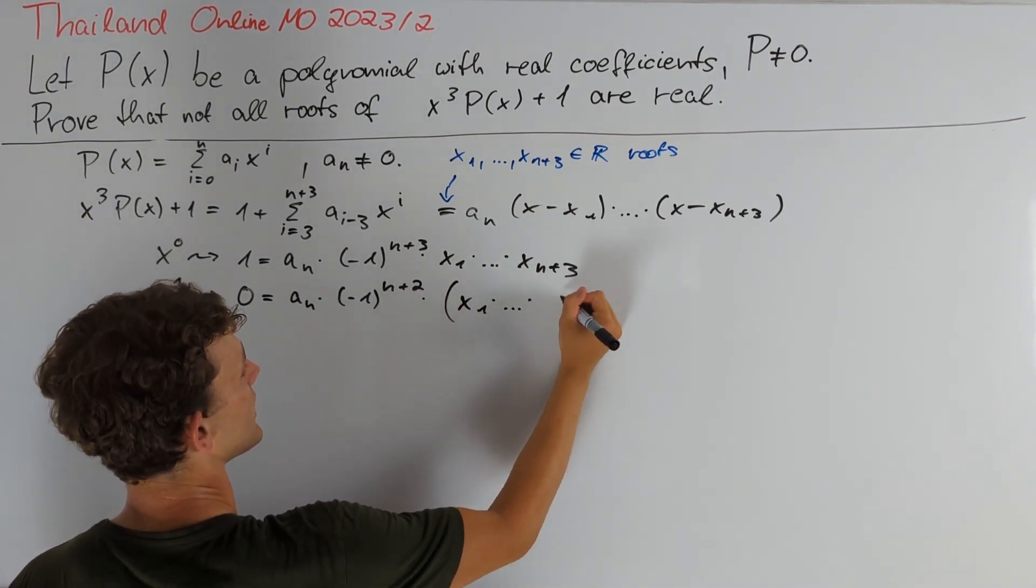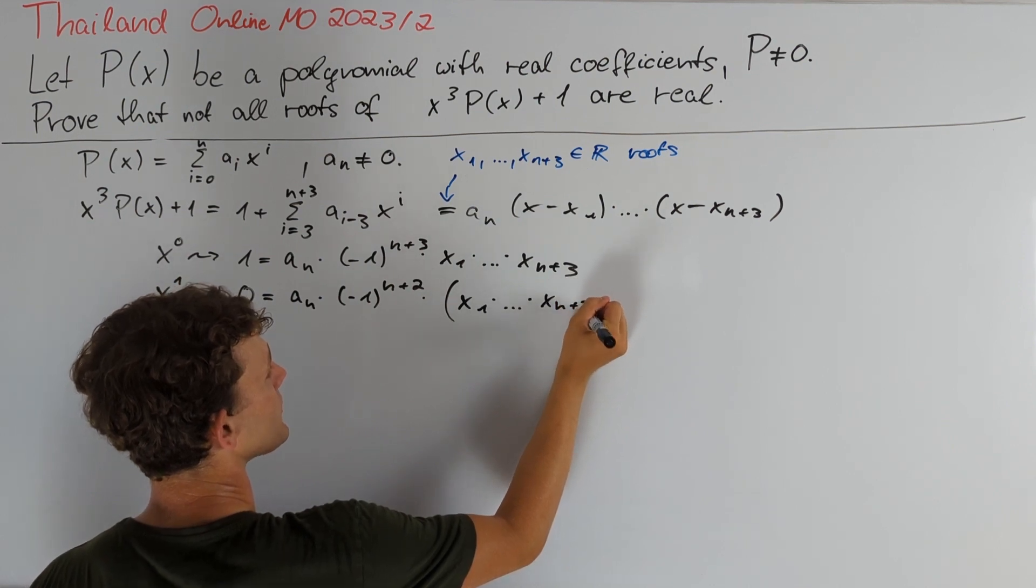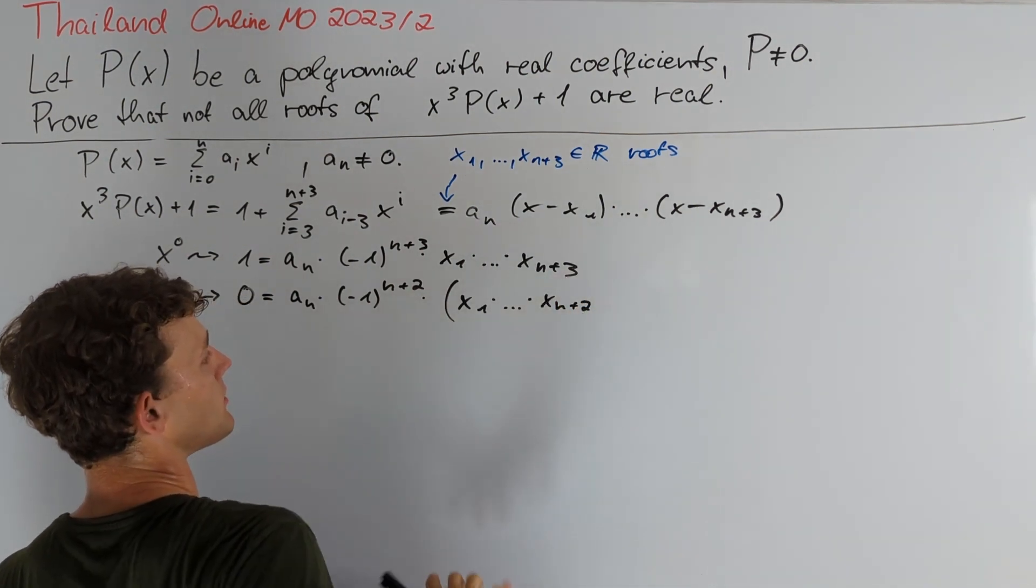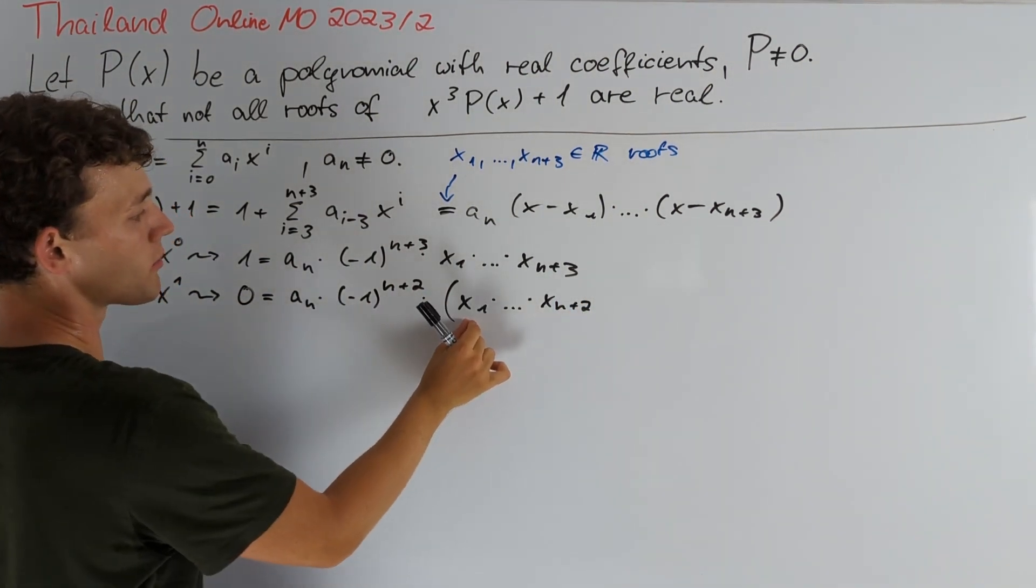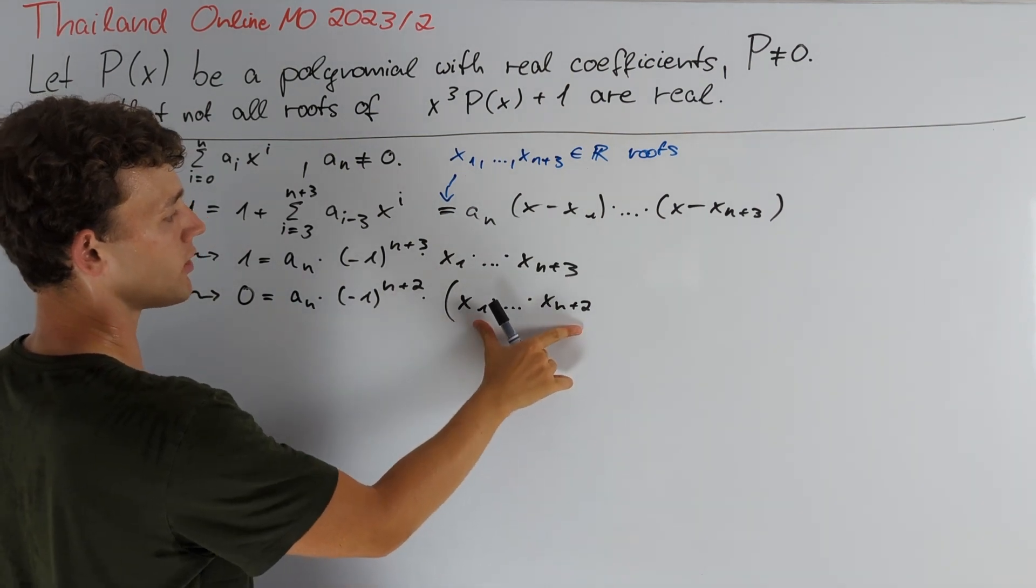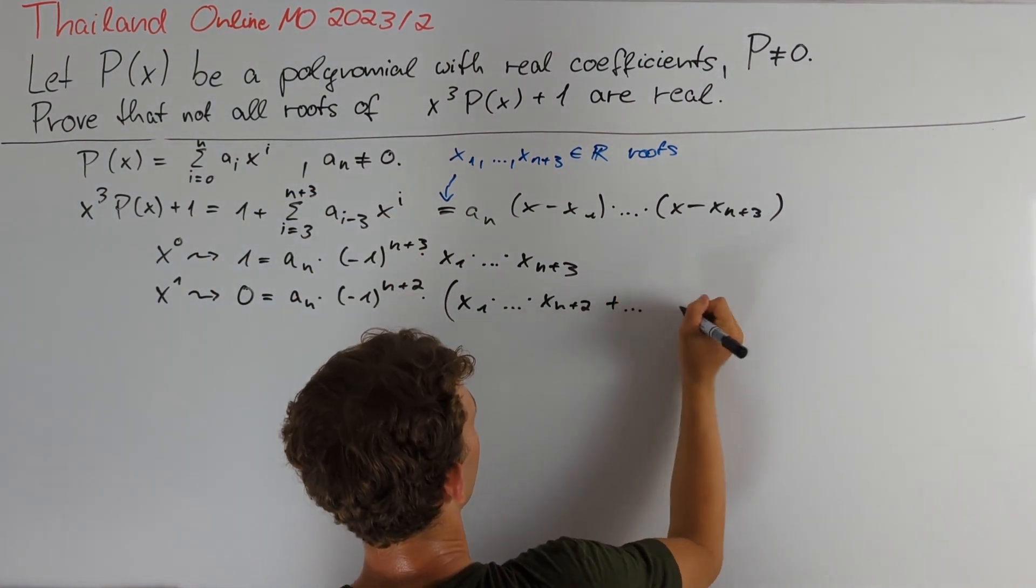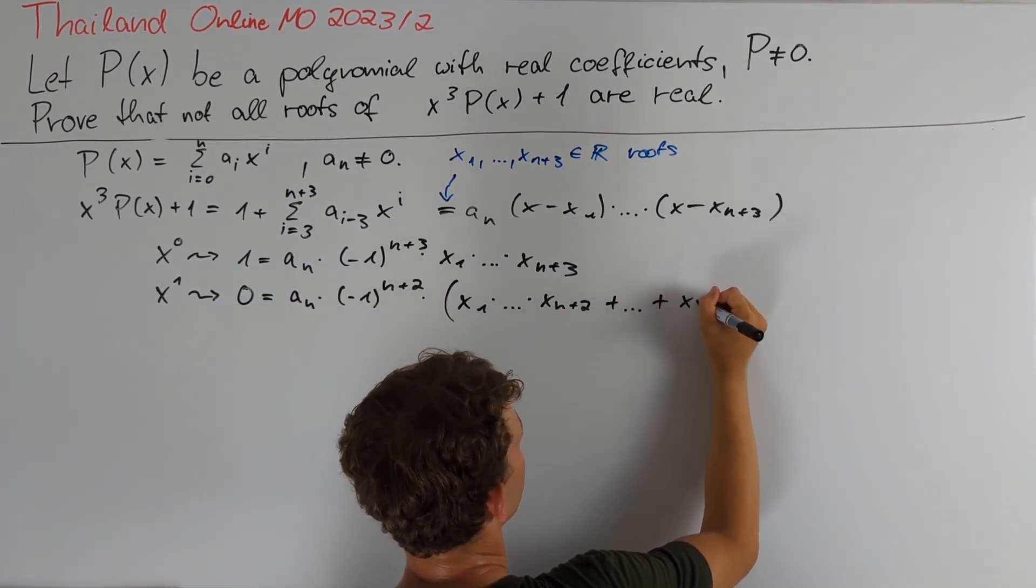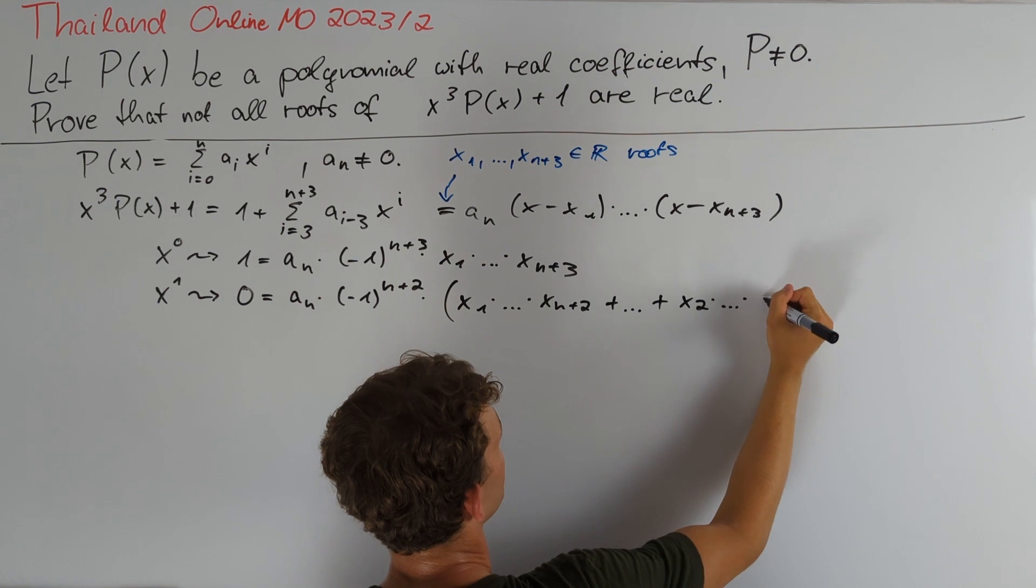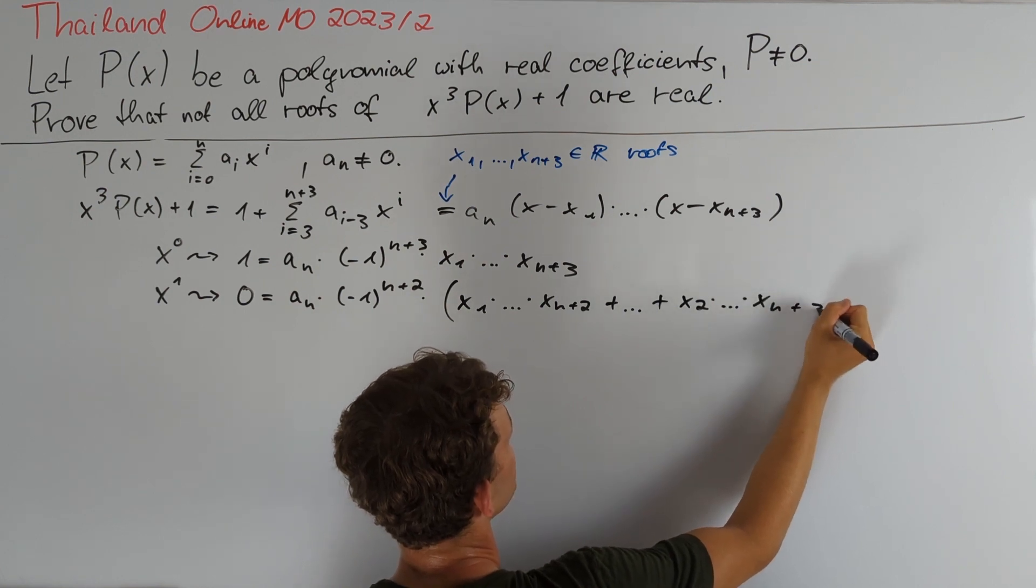And now we have more summands, namely we sum over all products of n+2 of these n+3 real roots. So we continue all the way up to x₂ times and so on times xₙ₊₃.